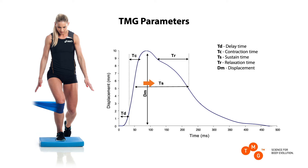TS, sustain time — a period of time in which the TMG response remains greater than 50% of DM. TR, relaxation time — the time in which the TMG response decreases from 90% to 50% of DM. DM, displacement — the maximal amplitude of muscle response. Contraction time TC and displacement DM are the most important parameters. TC offers information about the speed of muscle contraction, and DM about muscle tonus.